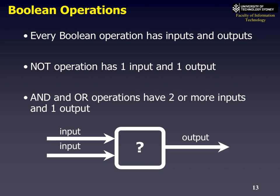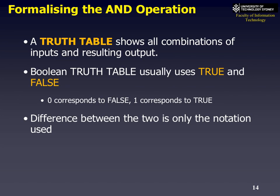Every Boolean operation has inputs and outputs — except for NOT, which has one input. Essentially you have two inputs, A and B, some operation occurs, and you get an output C. It's easier to represent these operations using what we call a truth table — basically a matrix or spreadsheet where you list true or false to show the results. We also tend to think of true as 1 and false as 0.